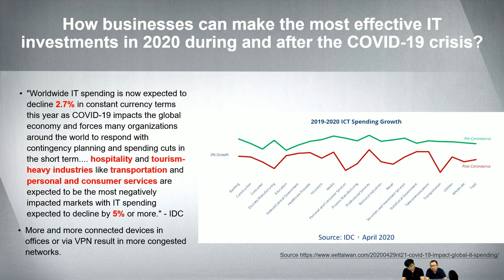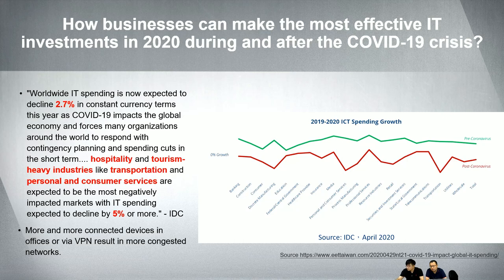You also face another challenge: there are more and more connected devices and users in your environment. You have not just computers, but also laptops, tablets, mobile phones, and even wearables. These can cause network congestion if you don't increase your network performance. Also, more people are working remotely via VPN, so you need internal traffic that can handle great bandwidth from various connected devices.